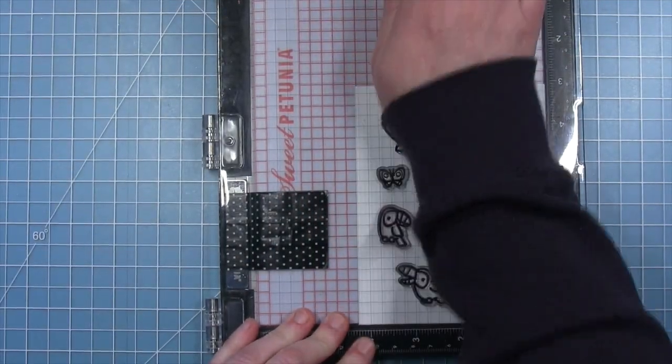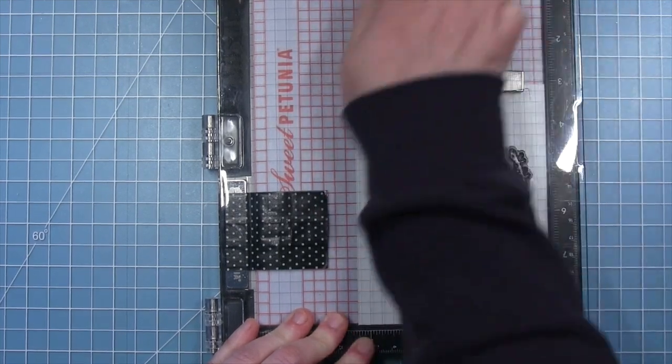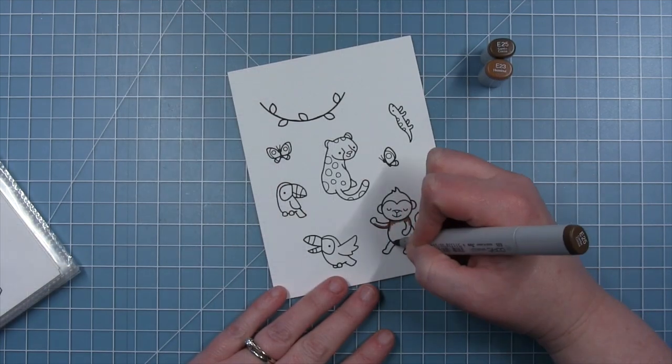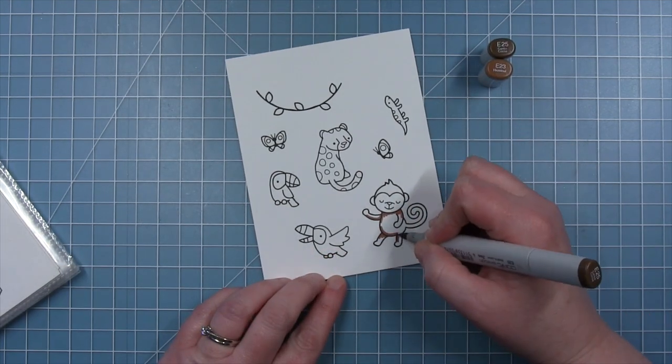I'm stamping out my images in some Lawn Fawn Jet Black ink so that I can do some coloring with my Copic markers. And I'm going to start out by coloring the little monkey.